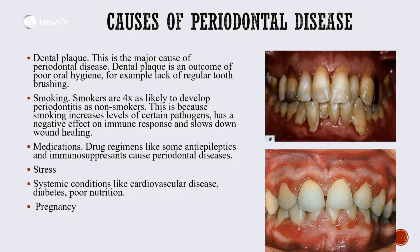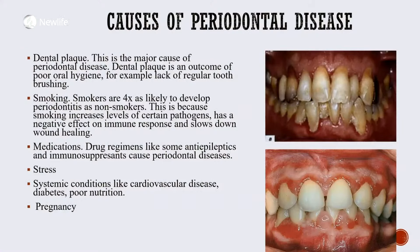The second risk factor for periodontal disease is smoking. Smokers are four times more likely to develop periodontitis than non-smokers. This is because smoking increases levels of certain pathogens, has a negative effect on the immune response, and also slows down wound healing. As you can see in the image, smoking may lead to poor oral hygiene and eventually cause you to lose your teeth.